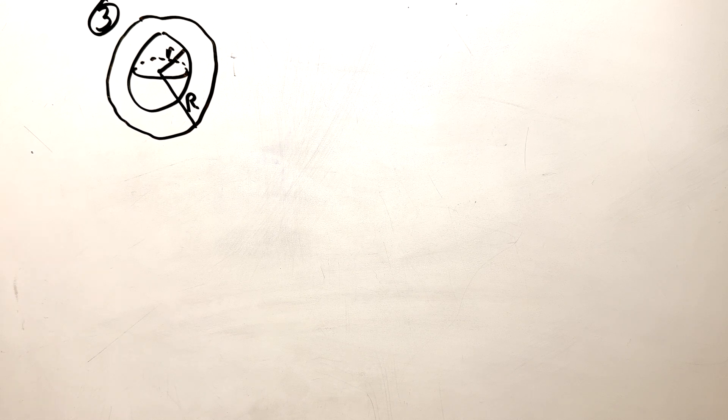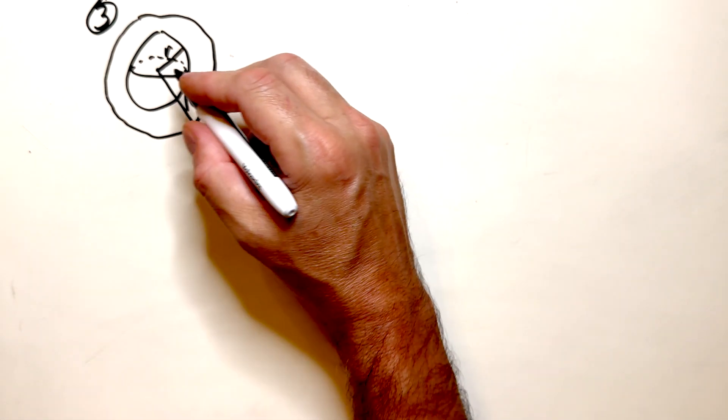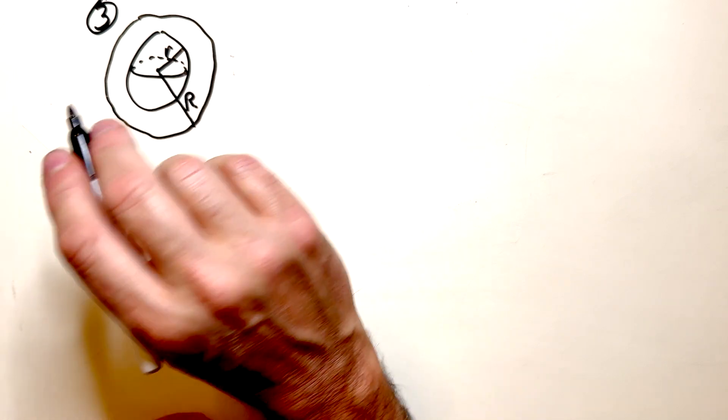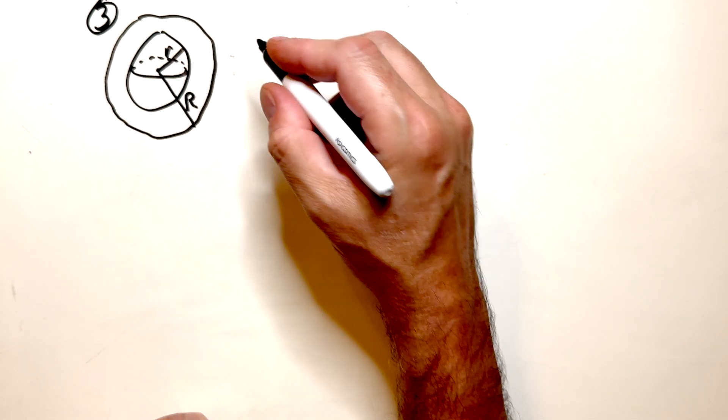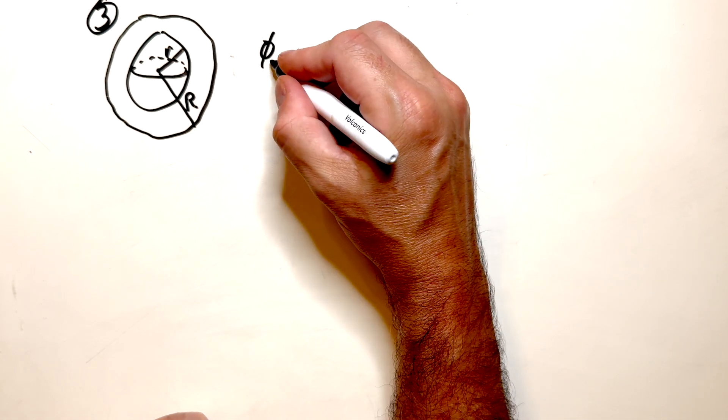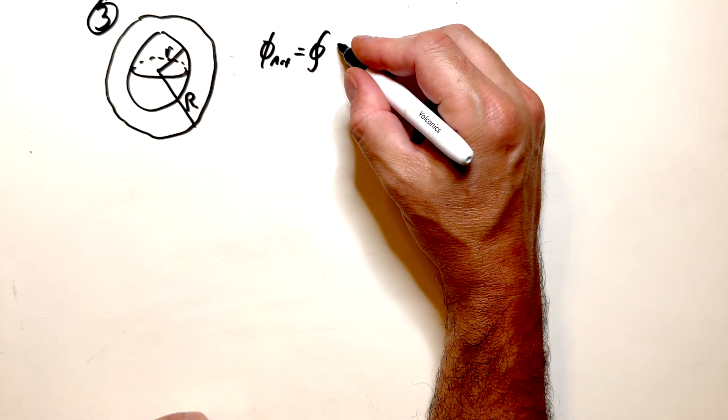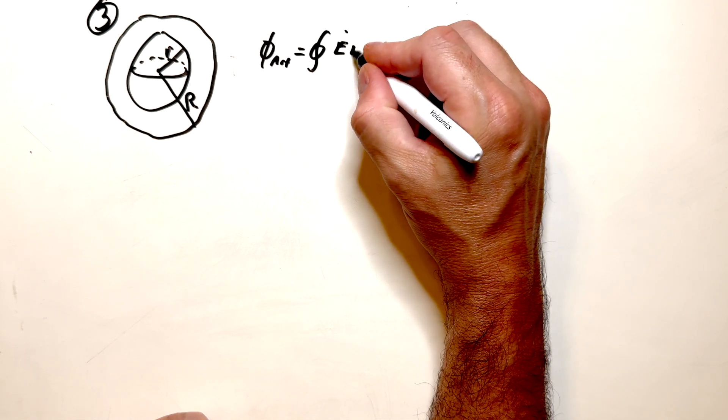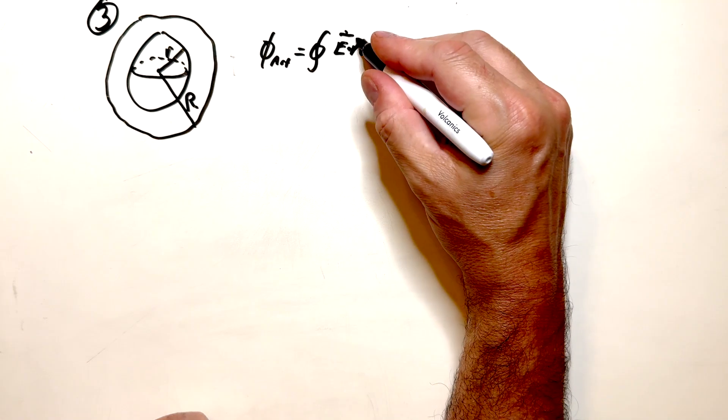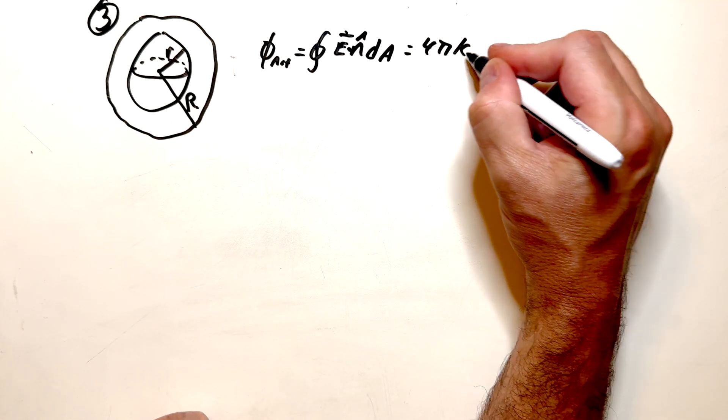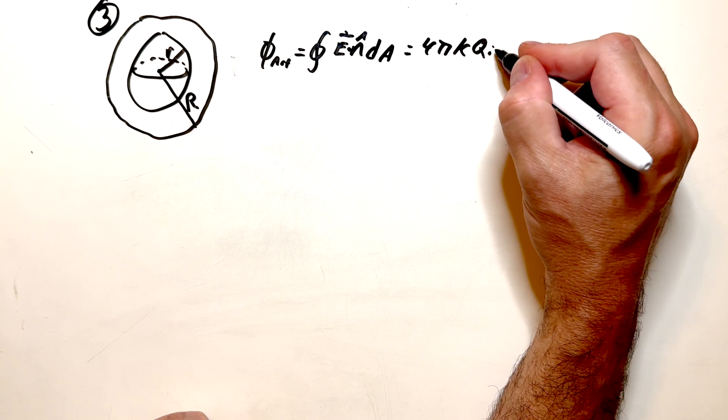So inside the metal sphere, little r is the radius of our Gaussian sphere. Big r is the radius of our metal sphere that has the surface charge on it. So what's that equal to? We get phi net equals the closed surface integral of E dot n dA, which is equal to 4 pi k times q inside.